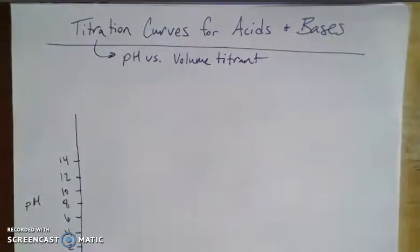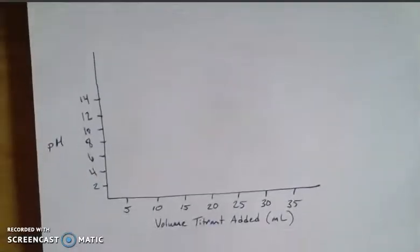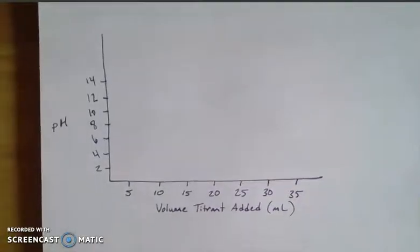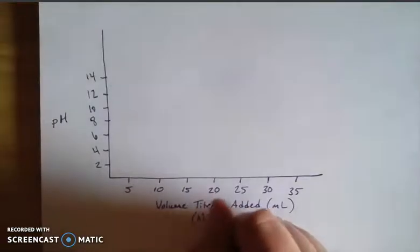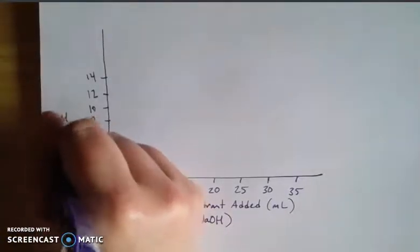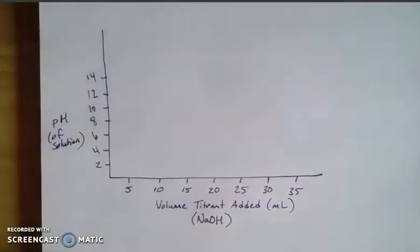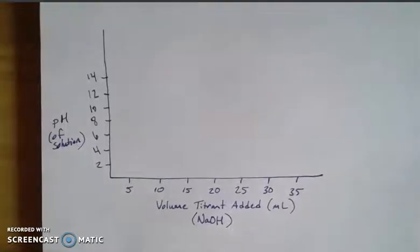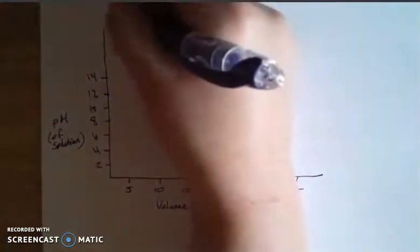Let's focus on the titrant being a base and what we're trying to find the concentration of is an acid. Thinking about this from a graphical perspective — because we're scientists and we're always thinking about things in terms of data — let's use a strong base. Let's say our titrant is sodium hydroxide, which we know is a strong base, and we want to see how the pH of the solution changes. The solution is going to start off being acidic, so let's do this for a strong base titrating a strong acid.